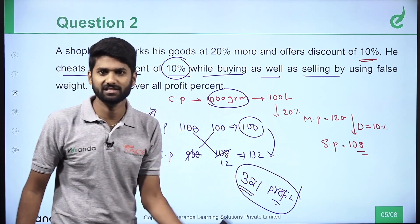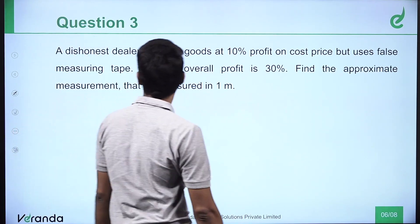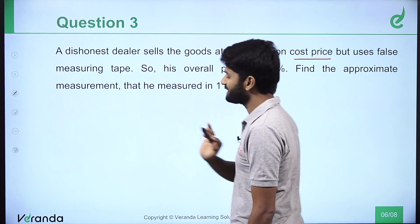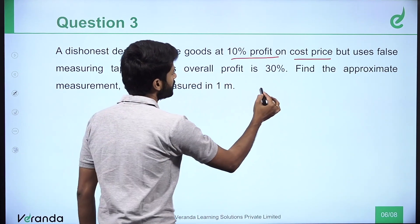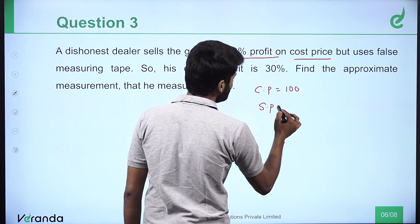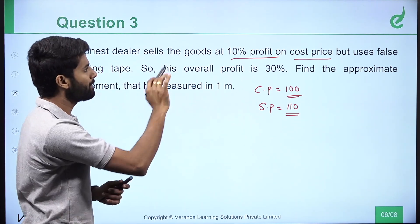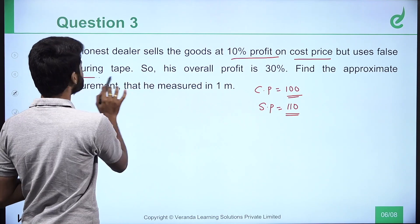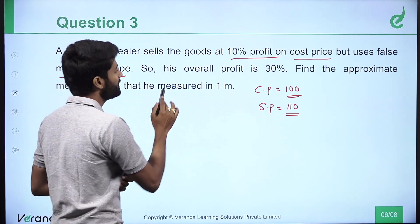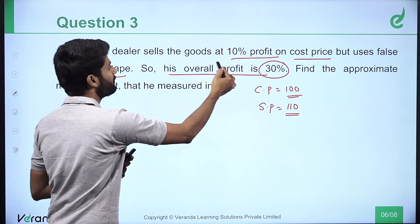First we have prices identified. So next question: an Edison's dealer sells the goods at 10 percent profit on cost price. This means cost price of the weight is equal to 100 rupees. He is expecting only 10 percent profit. But he uses a false measuring tape. His overall profit is 30 percent.